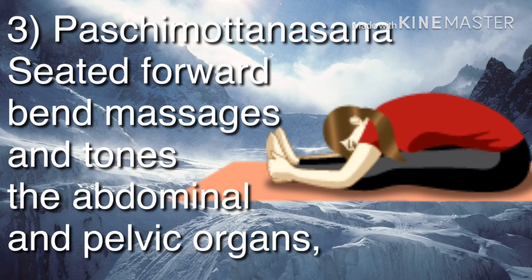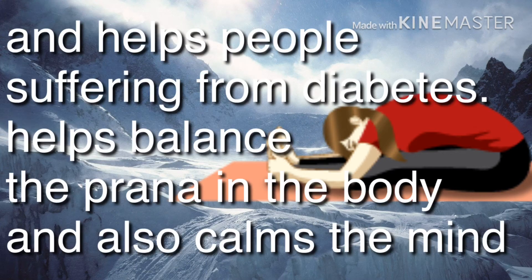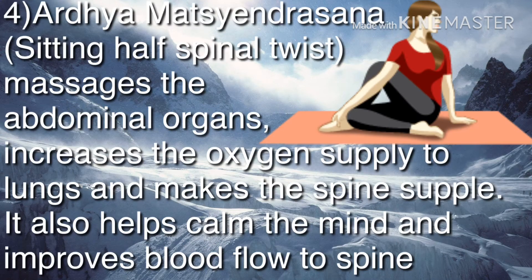Paschimottanasana, the seated forward bend, massages and tones the abdominal and pelvic organs, helps people suffering from diabetes, and helps balance the prana in the body while calming the mind. Ardha Matsyendrasana, the sitting half spinal twist, massages abdominal organs, increases oxygen supply to lungs, makes the spine supple, calms the mind, and improves blood flow to the spine.